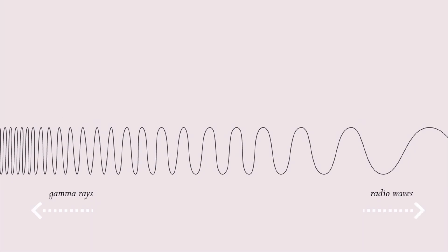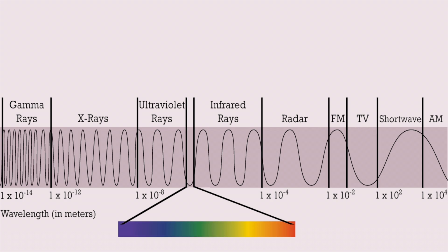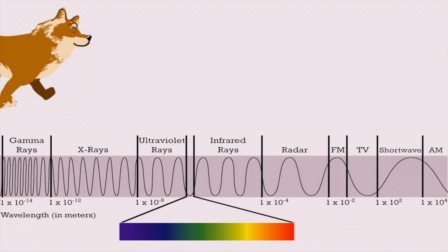That doesn't mean that these forms of light aren't visible, per se. Other animals have different kinds and numbers of cones, which allows them to see the world differently than we do.